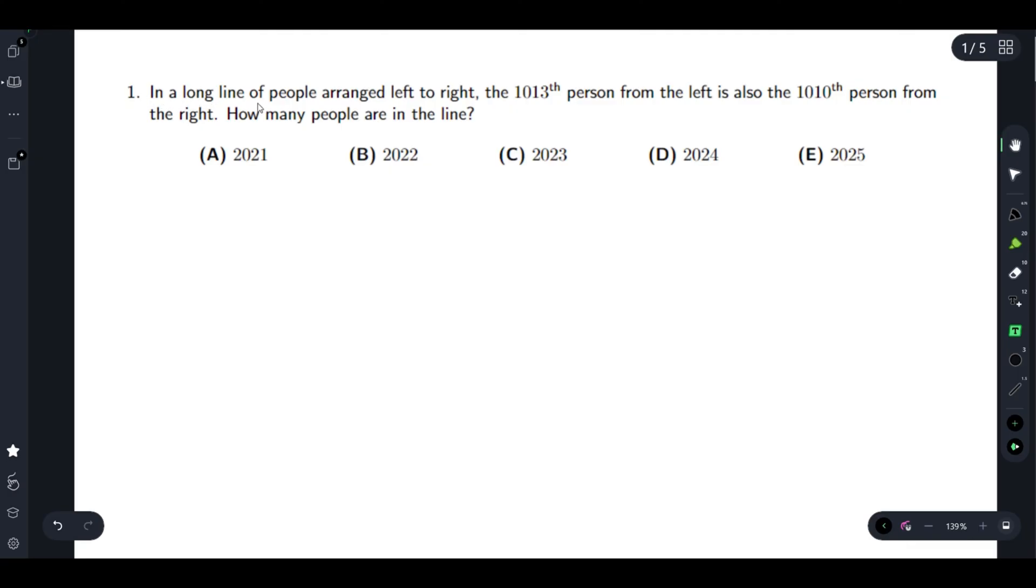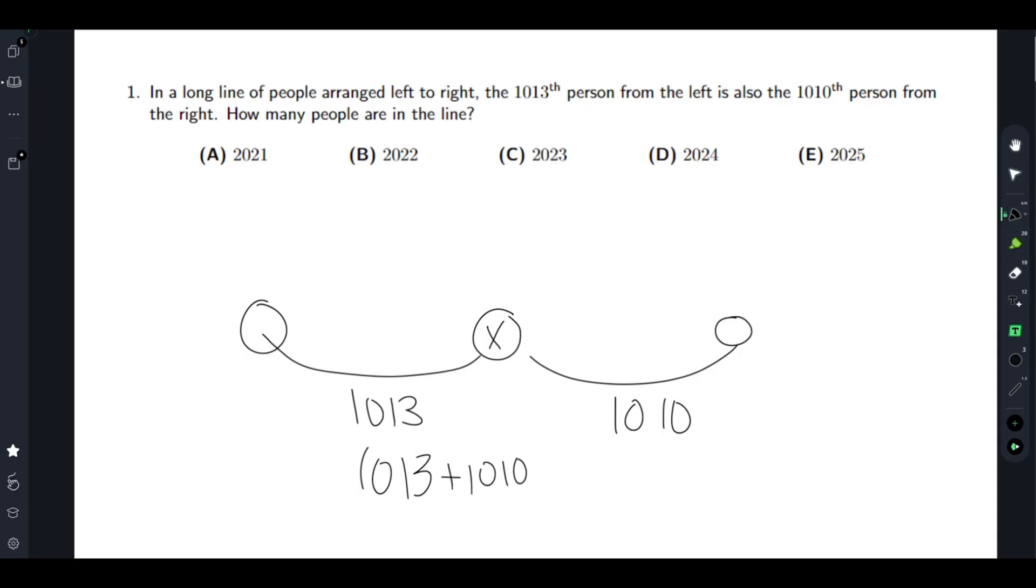Problem one: In a long line of people arranged left to right, the 1013th person from the left is also the 1010th person from the right. How many people are in the line? Let's say from the left there's 1013 people, from here there's 1010 people. We notice that we can do 1013 plus 1010, but we double count this person, so we subtract one and this gets us 2022.